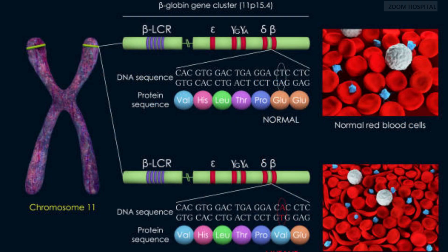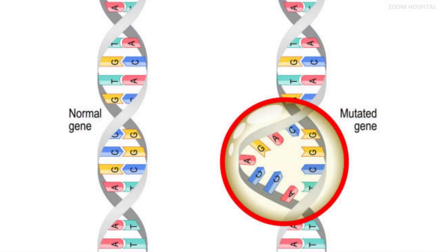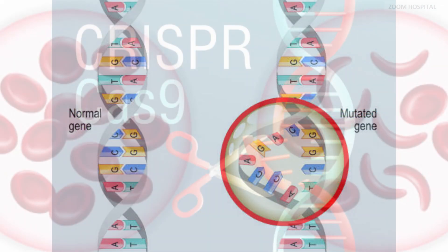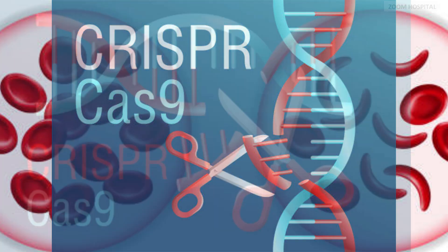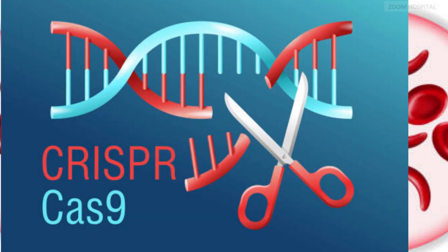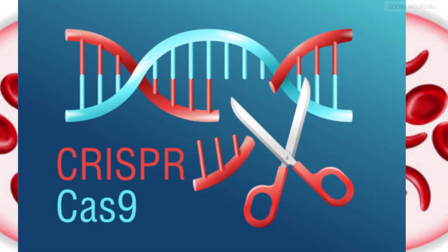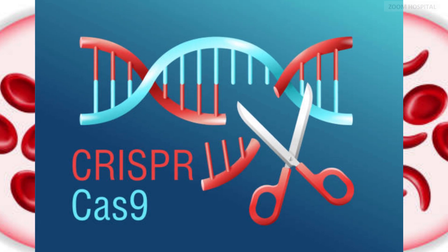Sickle cell disease, a hereditary blood disorder, has long posed significant challenges in the medical field due to its complex genetic nature. However, the emergence of gene editing technologies, notably CRISPR — which stands for Clustered Regularly Interspaced Short Palindromic Repeats — has changed this landscape.